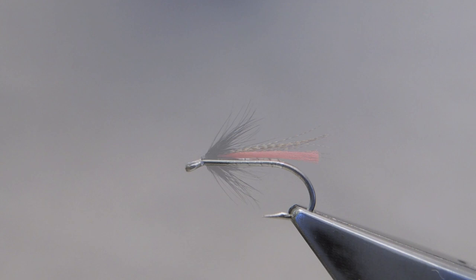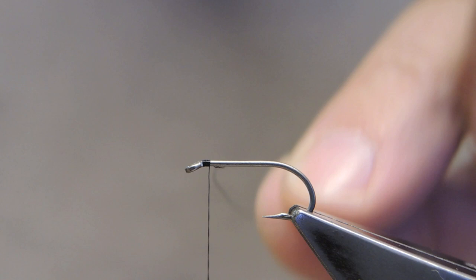The hook is a Partridge strong-hulled wet fly hook in size 10 and a thread Benecchi 12-0 in black attached just at the eye. Trim away the waste.